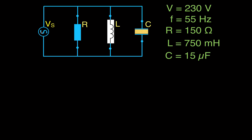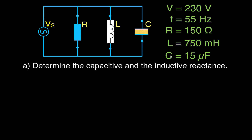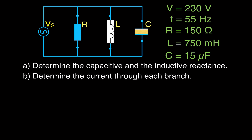So here we have our alternating voltage source. We have a resistor, an inductor, and a capacitor at 230 volts, frequency 55 hertz. The resistance of the resistor is 150 ohms, the inductance of the inductor is 750 millihenries, and the capacitance of the capacitor is 15 microfarads.